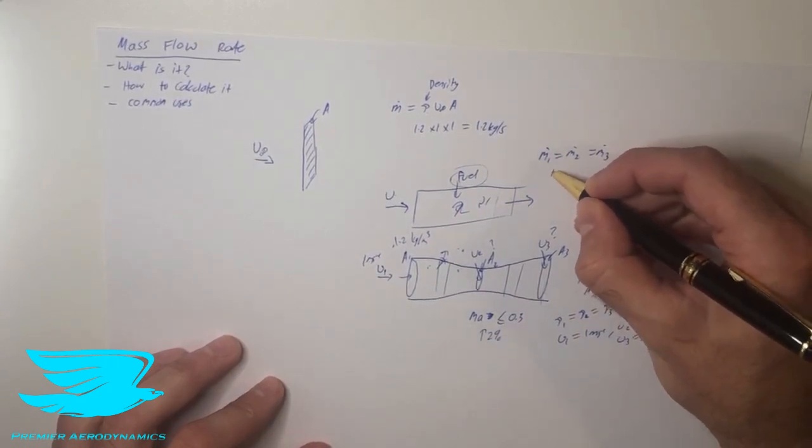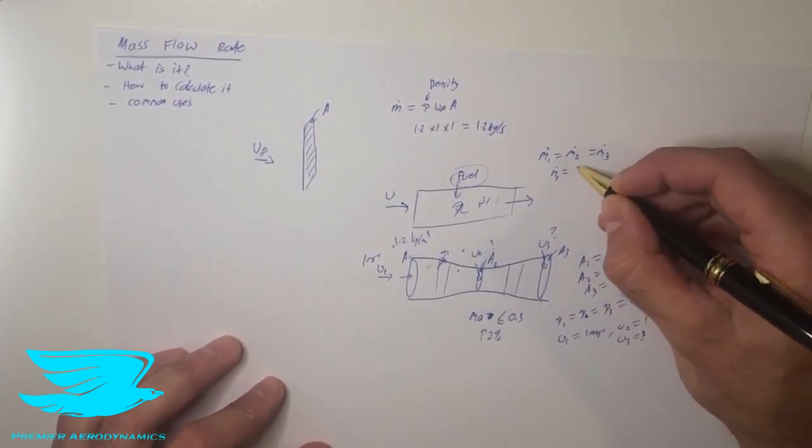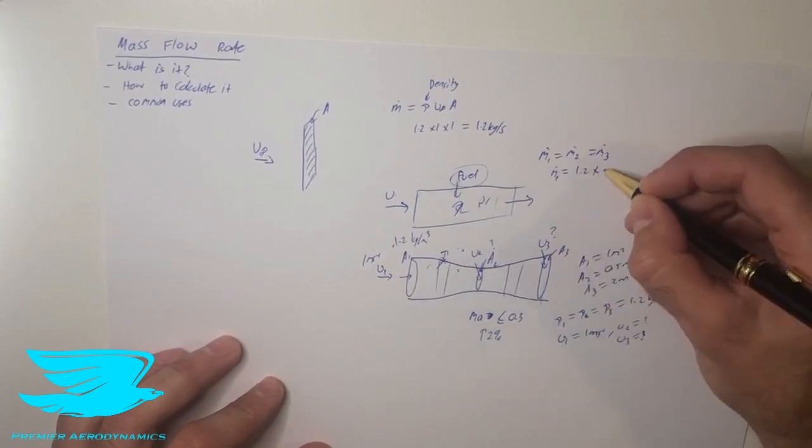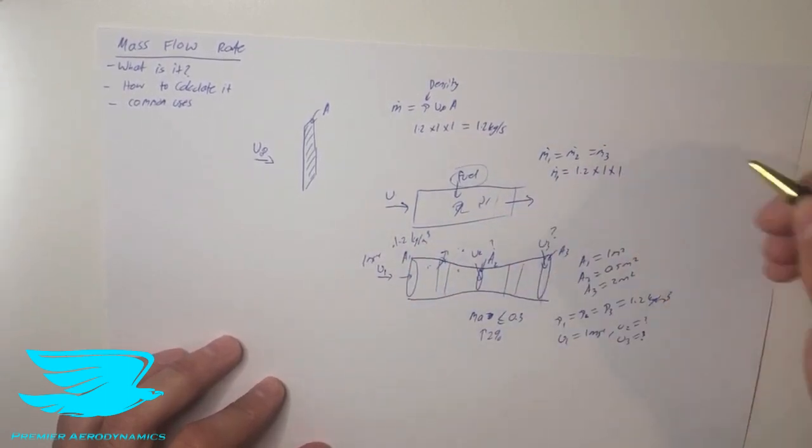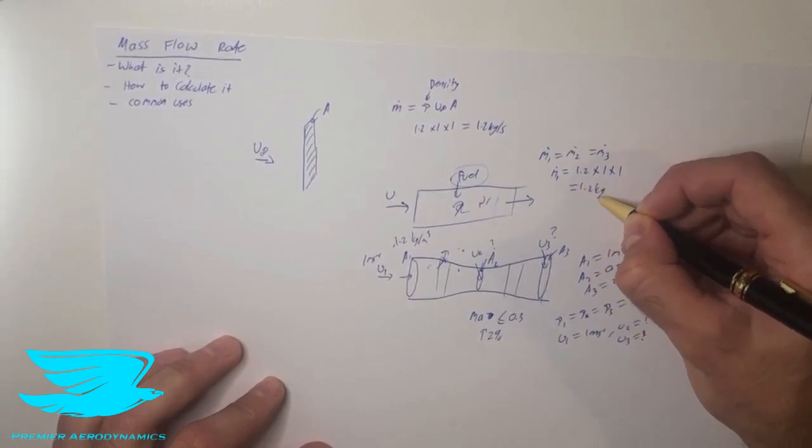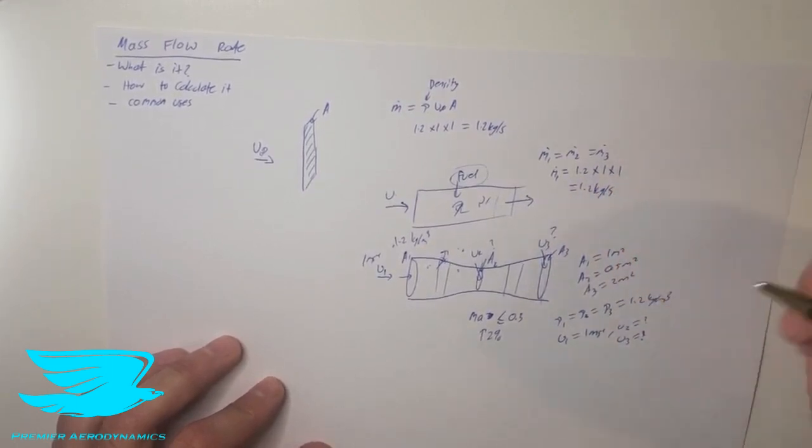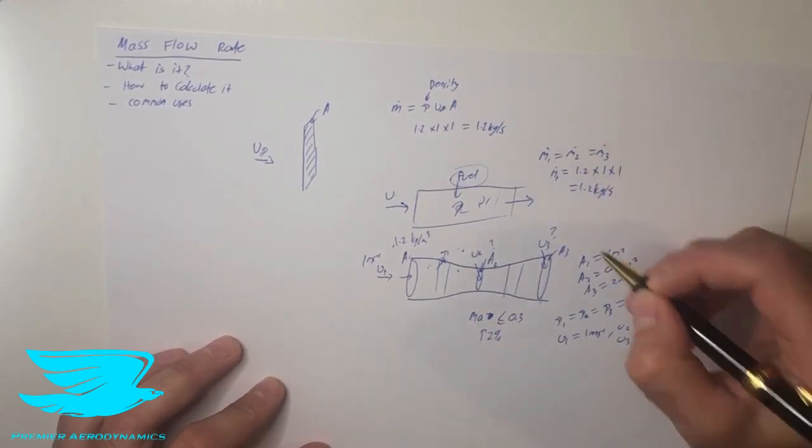So we can calculate mass flow rate at station 1 because we know the density is 1.2, we know the cross-sectional area is 1 square meter and the velocity is 1 meter per second. So that means we have 1.2 kilograms per second. And that equals m dot 2 and m dot 3.